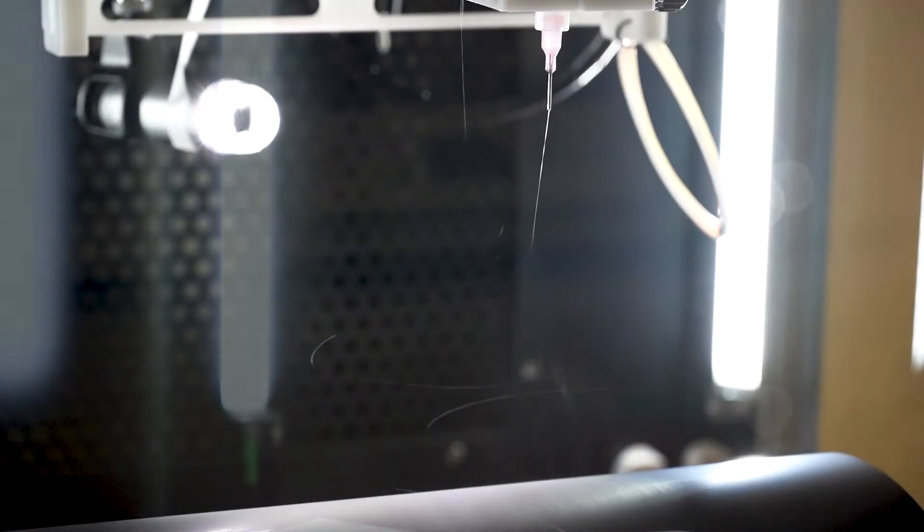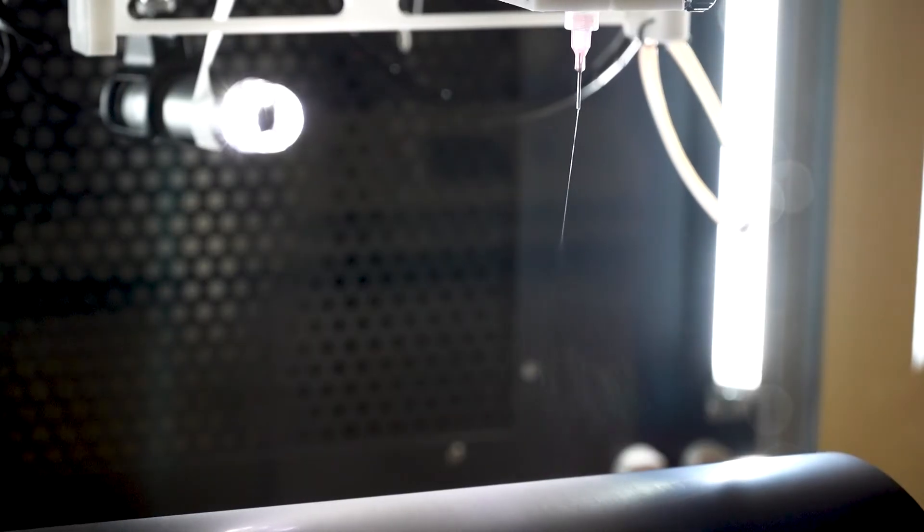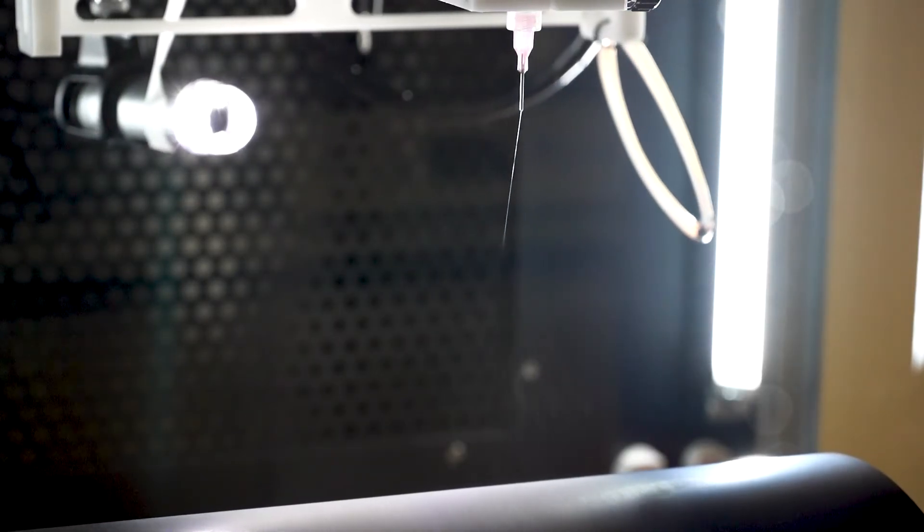The electric field causes the polymer jet to stretch and whip around. This whipping bending motion is called bending instability and it becomes supercharged with energy. It's like creating a spiderweb but on a nano or micro scale.